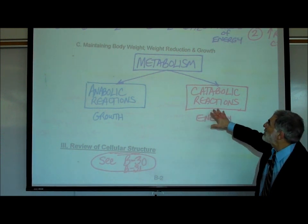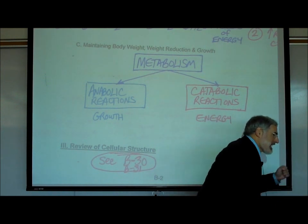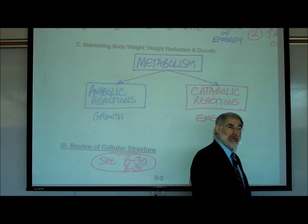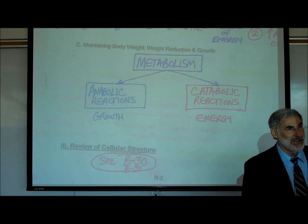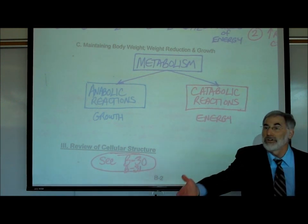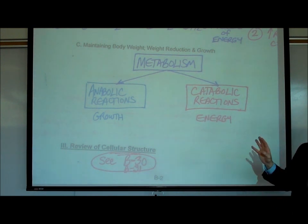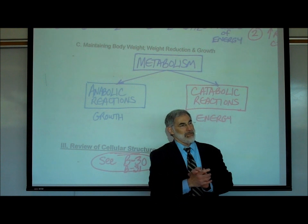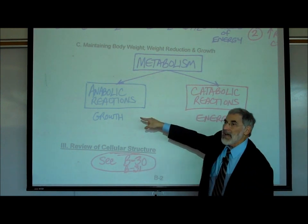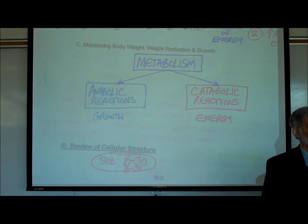How can we speed up the breakdown of organic molecules? Exercise. When you exercise, your muscles need to break down organic molecules at a faster rate to make ATP. The more you exercise, the faster you break down those glycogen and carbohydrate stores, those triglycerides and fat stores, as a source of energy to make ATP. So: you want to get thinner — eat less, exercise more. You want to slow down the anabolic growth reactions and speed up the catabolic breakdown reactions that release energy.